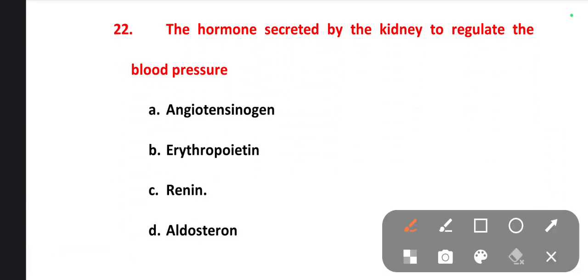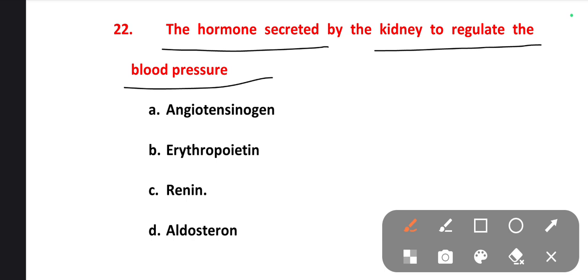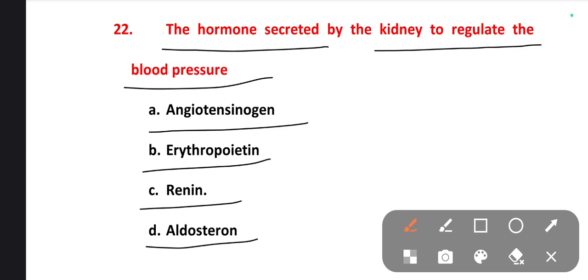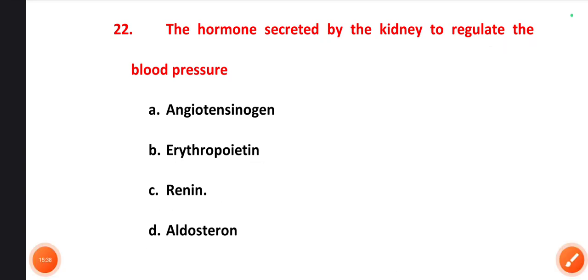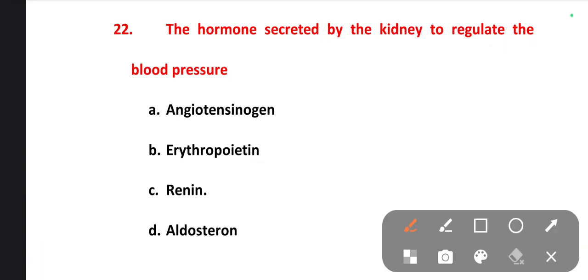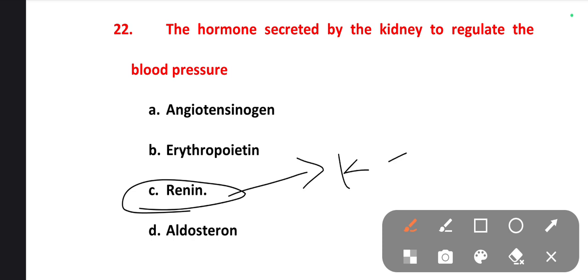The next one is: the hormone secreted by the kidney to regulate blood pressure. Options are angiotensinogen, erythropoietin, renin, aldosterone. The right one is renin. Renin is secreted by the kidney to control blood pressure.